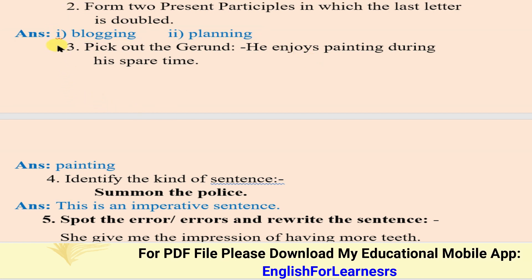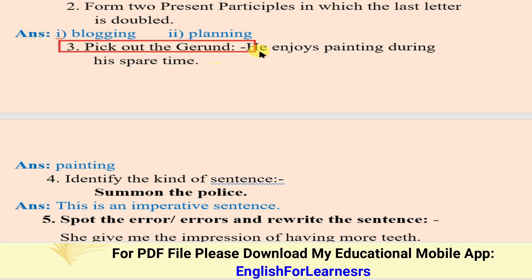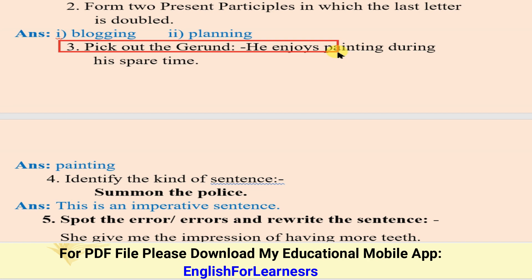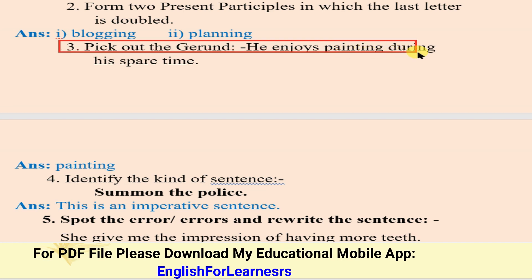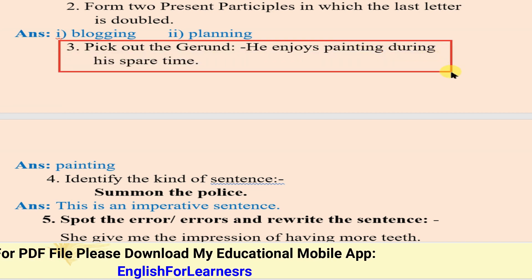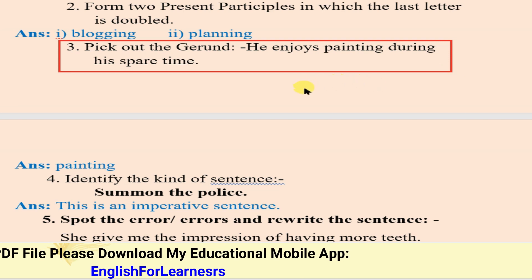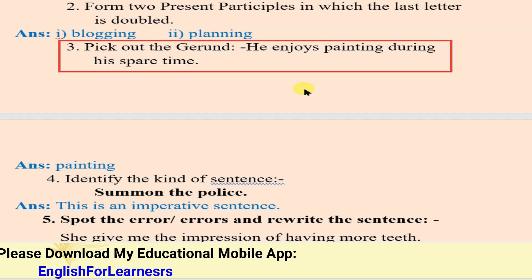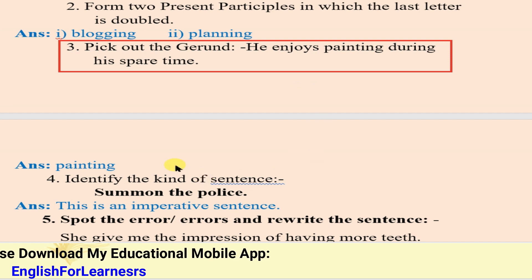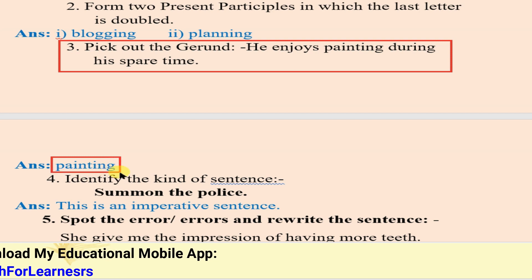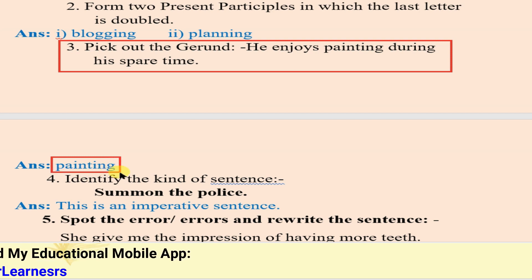Next, activity number three: pick out the gerund. The sentence given is: 'He enjoys painting during his spare time.' In this sentence, which is the gerund? 'Painting' is the gerund. It functions as the object of the verb 'enjoys'.